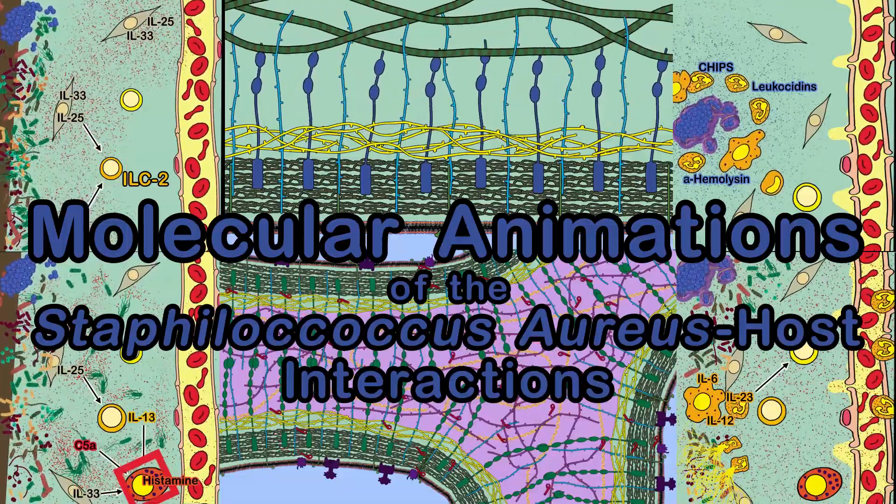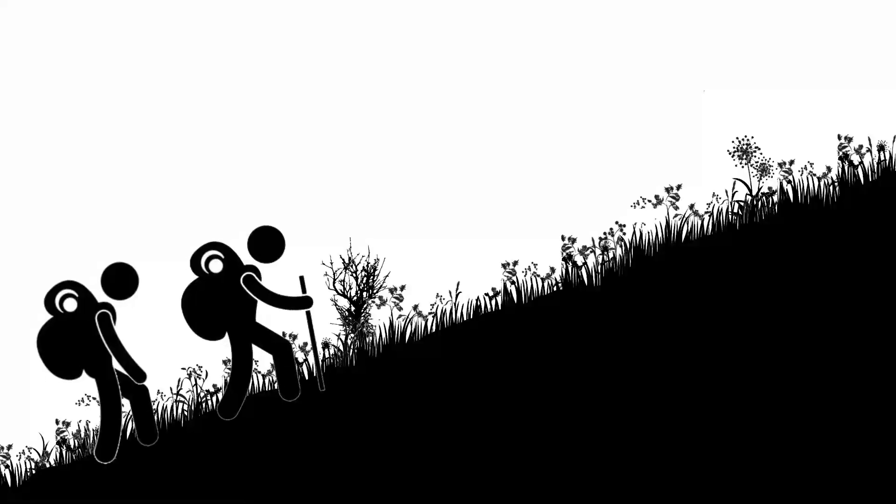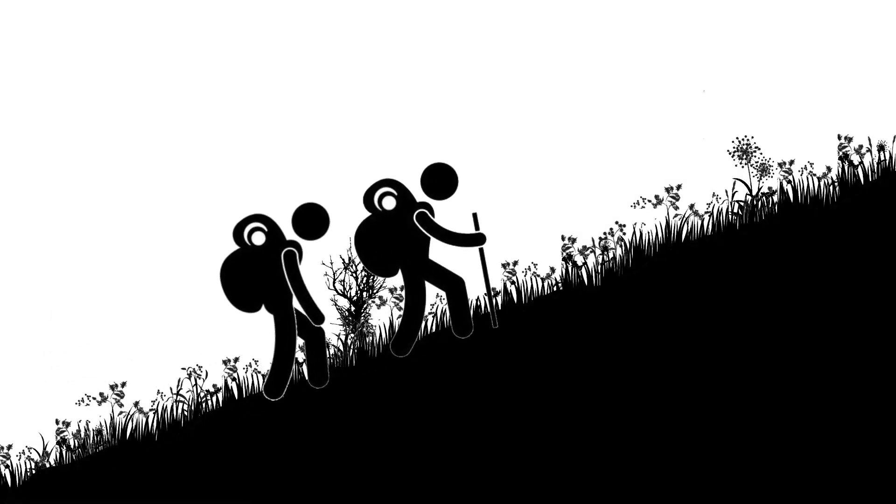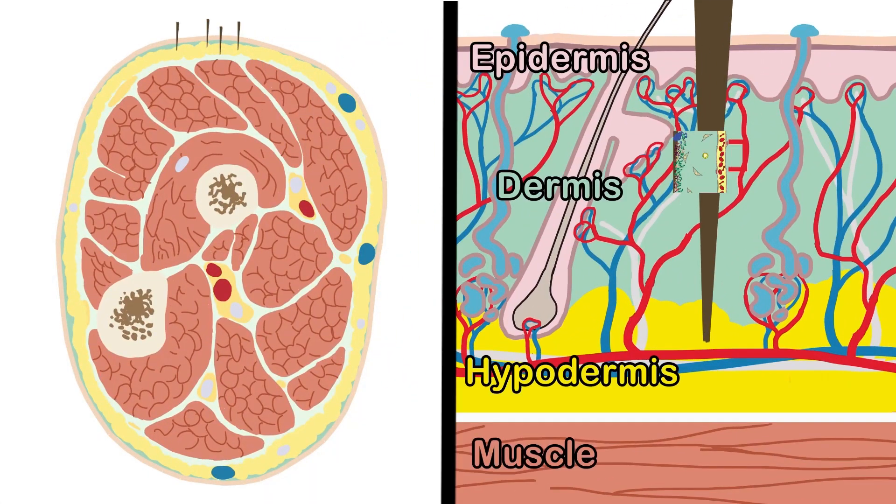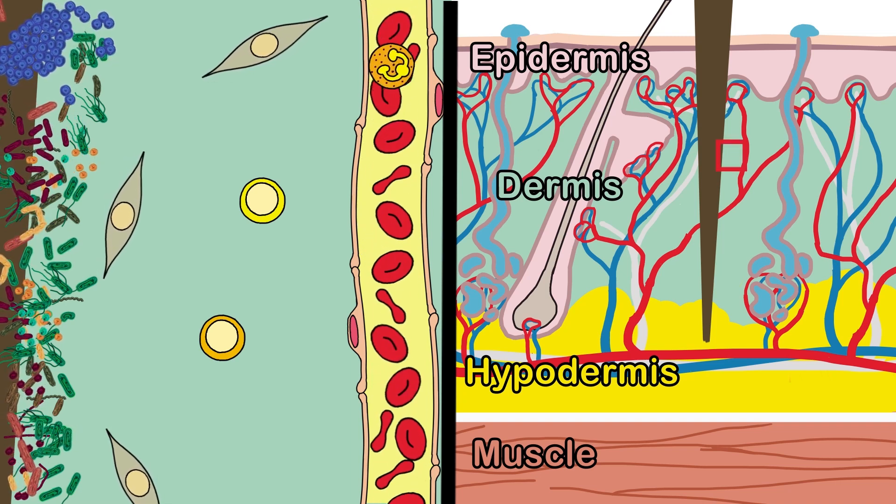Molecular animations of Staphylococcus aureus host interaction. Robert and Mike went out to explore nature on a mountain. Suddenly Robert falls on a bush with spines that penetrate his skin. The spine crosses the epidermis and dermis skin layers, and with it also enters many different bacteria.